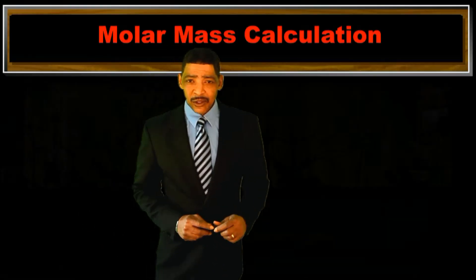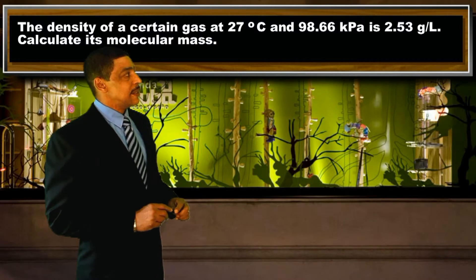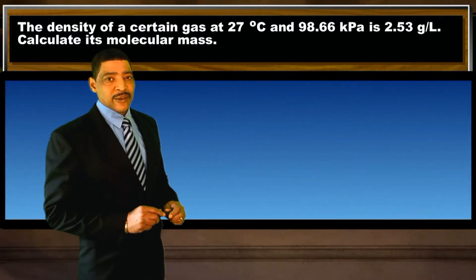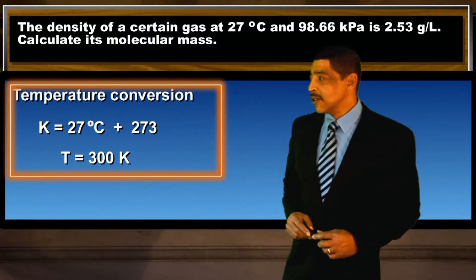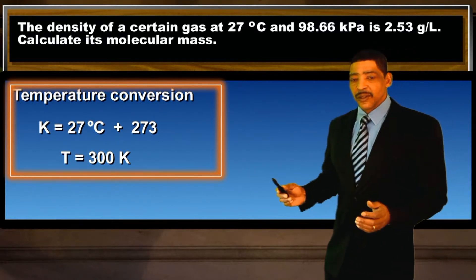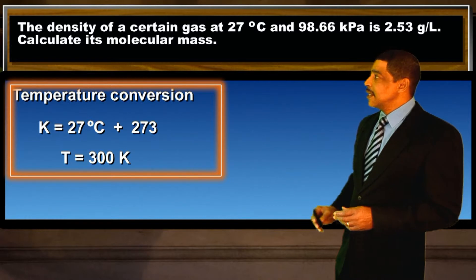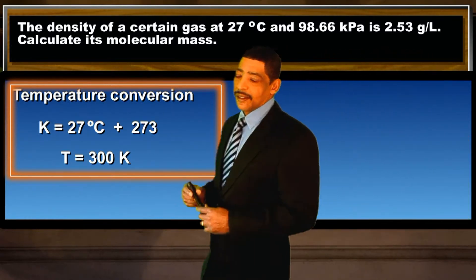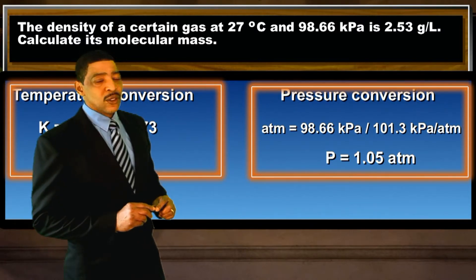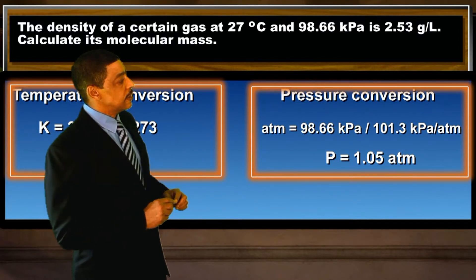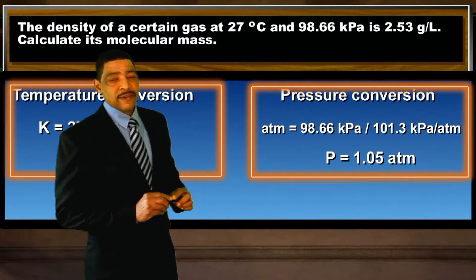Now let's use the density calculation to determine the molar mass of a gas. Consider the following: the density of a certain gas at 27 degrees Celsius and 98.66 kPa is 2.53 grams per liter. Calculate its molar mass. The first step is to perform the appropriate conversions. To convert 27 degrees Celsius to Kelvin, simply add 273, generating a temperature of 300K. To convert the pressure to atmospheres, divide 98.66 by 101.3, giving 0.974 atmospheres.